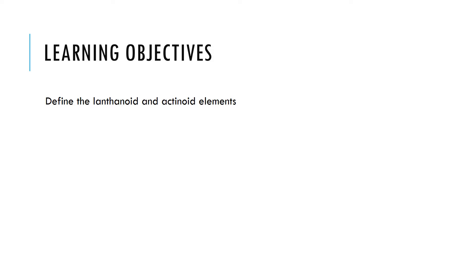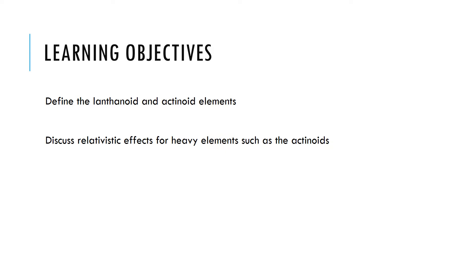I'd like to start simply today and consider what we actually mean by lanthanoids and actinoid elements, developing an understanding of a definition for these elements. I'd also like to discuss some of the relativistic effects for heavy elements such as the actinoids, which is quite prevalent in the actinoids and really differentiates them in terms of their chemistry from the lanthanoids. Relativistic effects are also present in heavy atoms such as gold, but we'll focus our discussions on the F block.